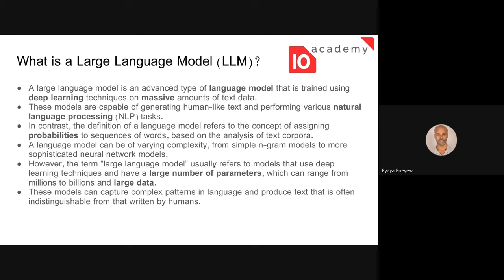When we say large or massive, it's data up to petabytes. They also use a large number of parameters — in the millions and billions — to train the models. These models are capable of generating human-like text and performing many tasks such as text summarization.